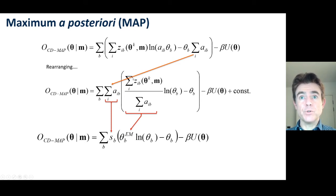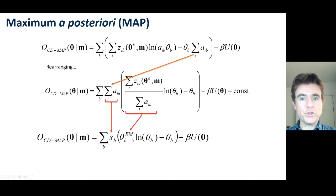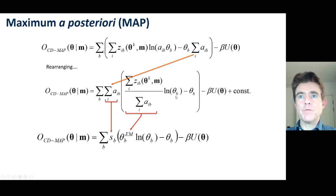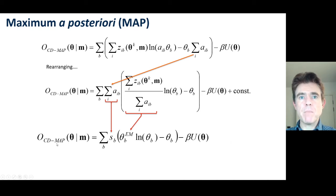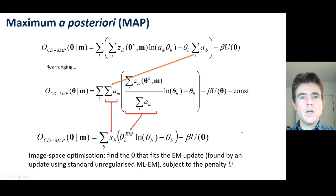In other words, this is just the regular MLEM update, easily obtained by forward projection ratio, back project, and multiply. And then finally we have the logarithm and the minus theta term. So what we end up with in this complete data MAP objective function is purely an image space optimisation — we just want to find the theta that maximises that expression.